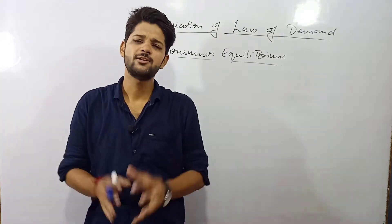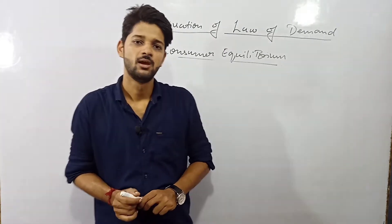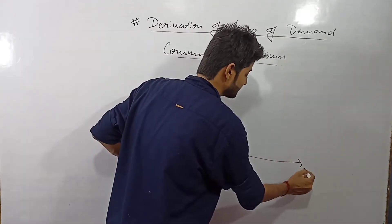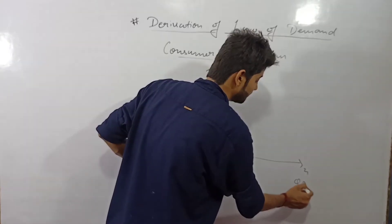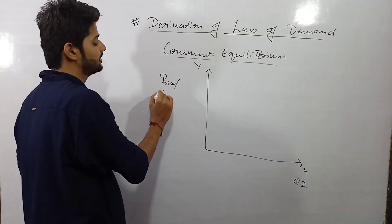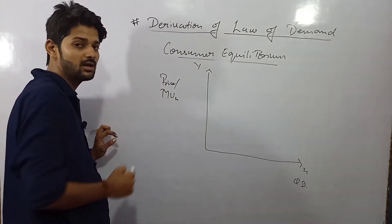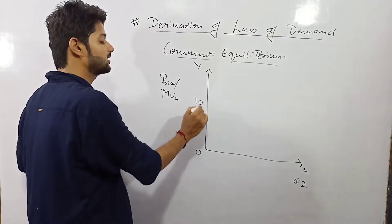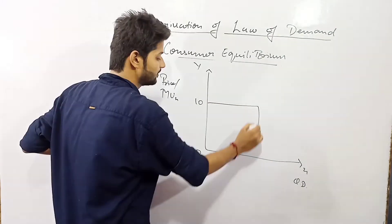So let's do the diagrammatic explanation. If we talk about the diagram, so we know that on the X axis we plot the quantity demand and on the Y axis we plot the price as well as the marginal utility from the X.